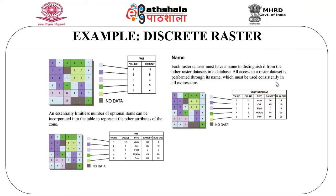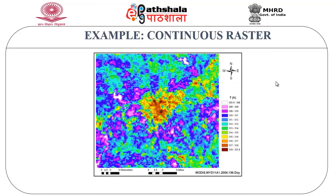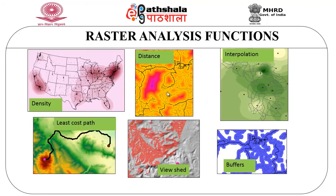This is an example of a continuous raster representation technique where the data is continuous in nature. It represents some kind of miles or kilometers, with distances represented using various colors and hues. We can also look at the direction being represented here, showing an example of a continuous raster dataset being visualized.